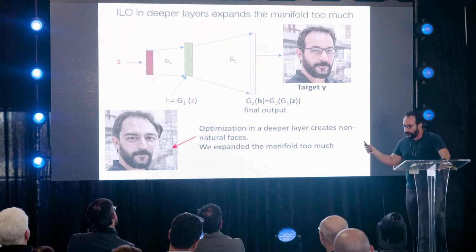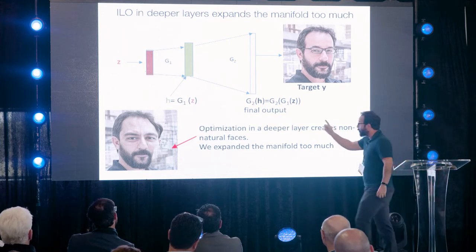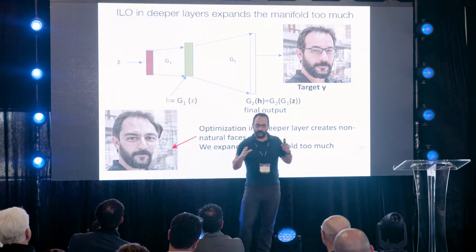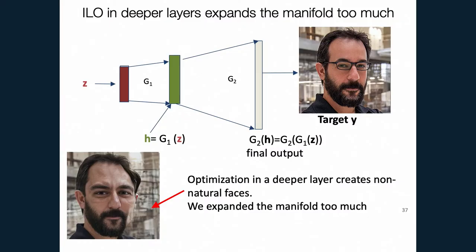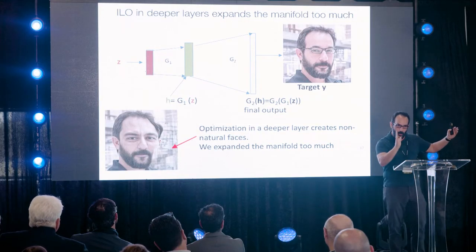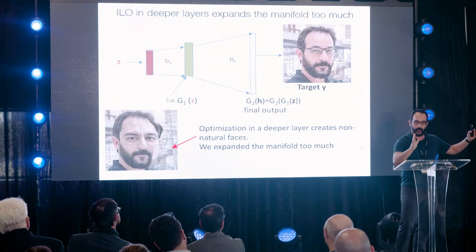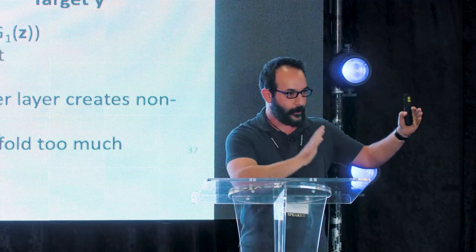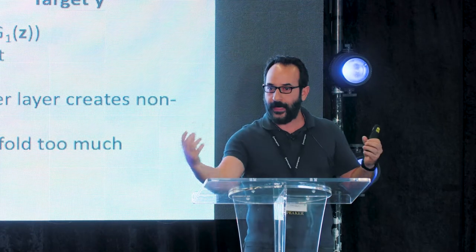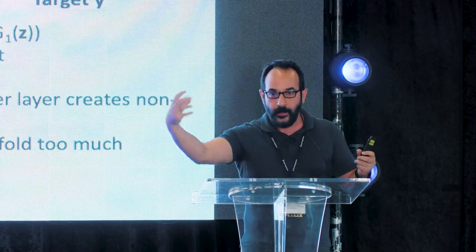If you go too deeply in the network, the network becomes too powerful and too flexible. It can produce not only realistic faces but Picasso-type distortions — fun for art, but problematic for reconstruction. The deeper you go, the more expressive your network is, which is both a good and bad thing: good because it can produce more images, bad because you need more measurements to reconstruct something.